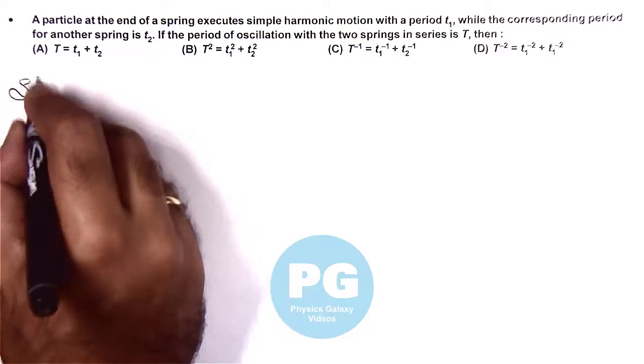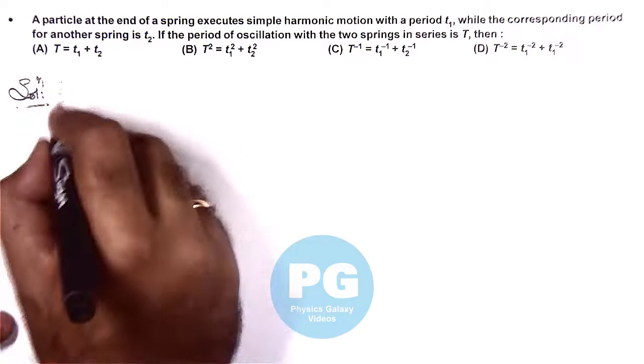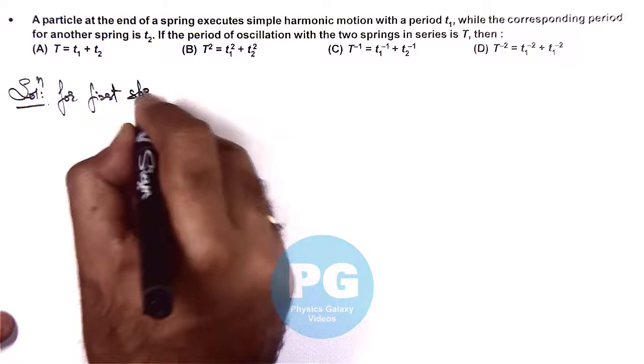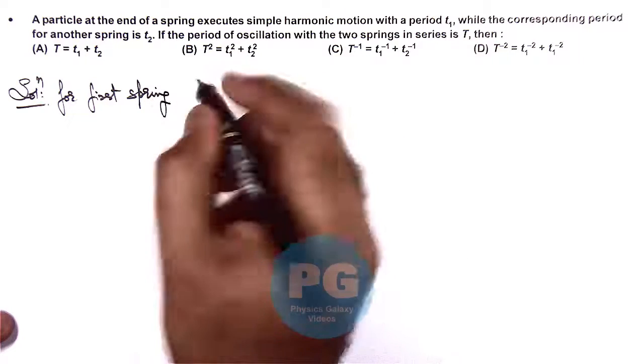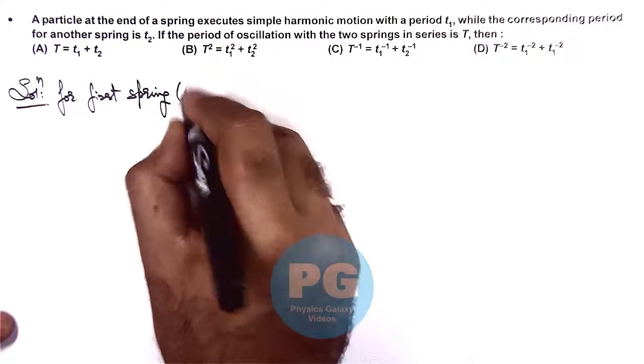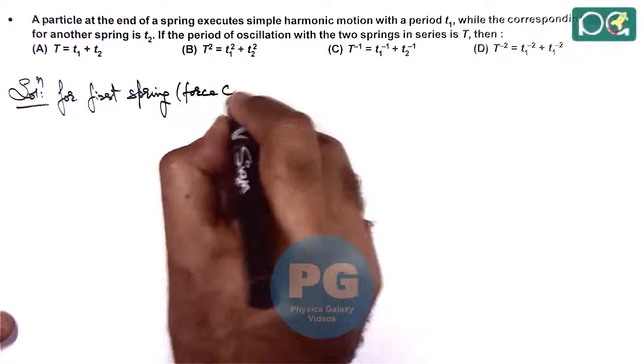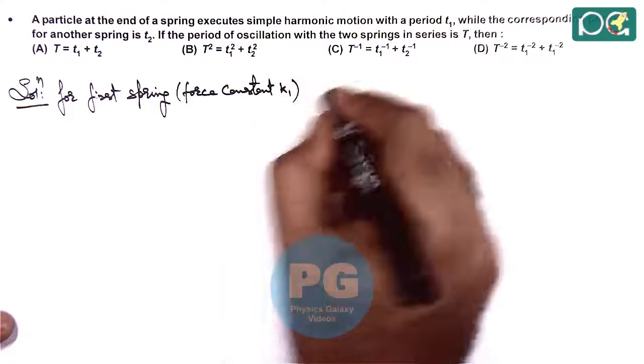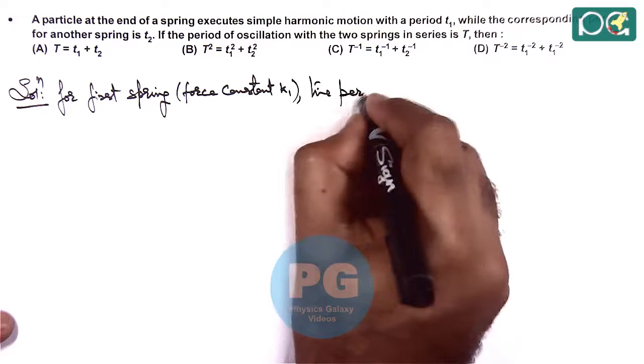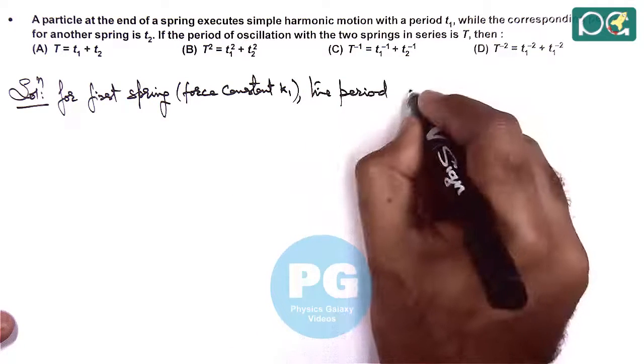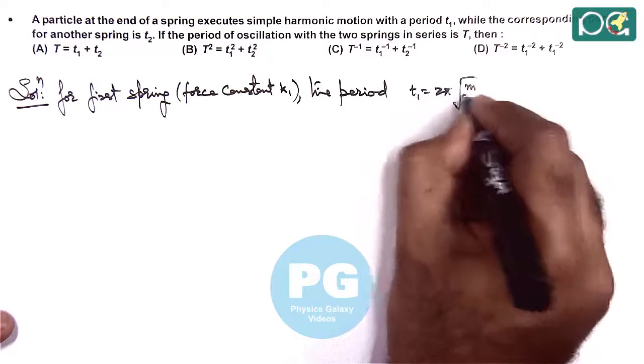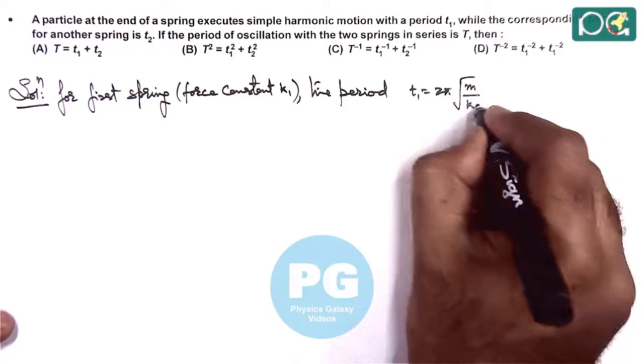For the first spring with force constant k1, the time period can be given as T1, which equals 2π√(M/k1).